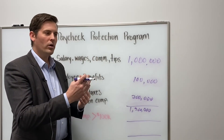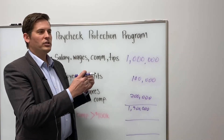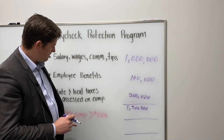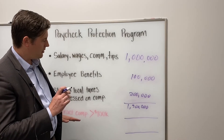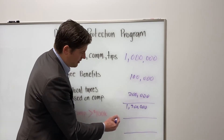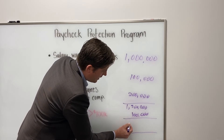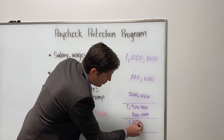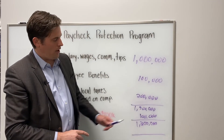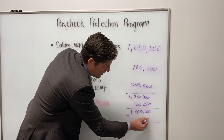For example, if you had four individuals making $125,000, you would have to subtract $25,000 times four. In this case, that means subtracting $100,000, and you would end up with a total eligible annual payroll expense of $1,200,000.